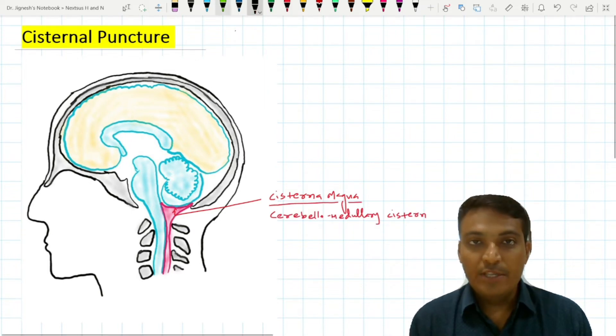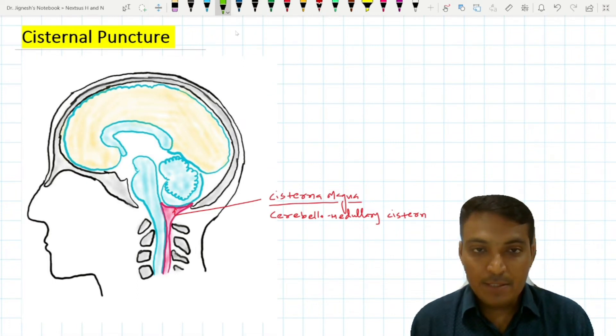In the suboccipital region, we find a membrane present here. This membrane extends from the margin of the foramen magnum to the upper aspect of the posterior arch of the atlas. This membrane is the posterior atlanto-occipital membrane.